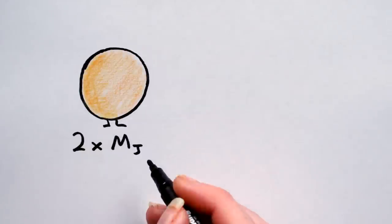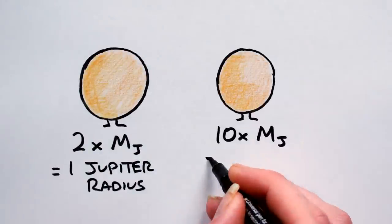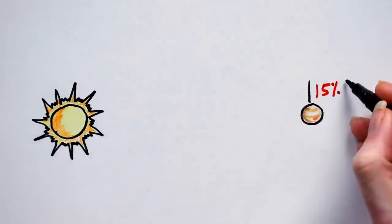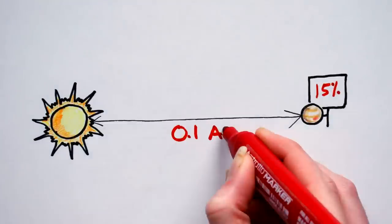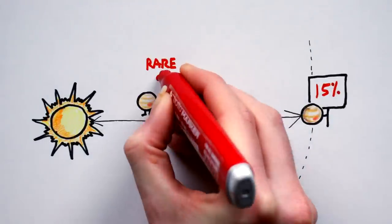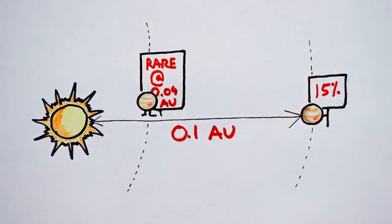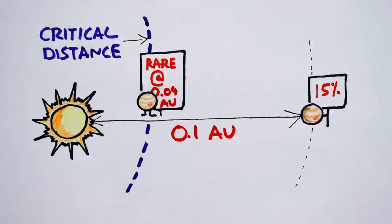Take home here is that planets more massive than Jupiter will probably not be much larger than Jupiter. About 15% of the known extrasolar planets orbit closer than 0.1 AU from their parent star. However, gas giants with orbits less than 3 days, or 0.04 AU, are extremely rare, suggesting that 0.04 AU may be a critical distance inside of which we are unlikely to find giant gaseous planets.